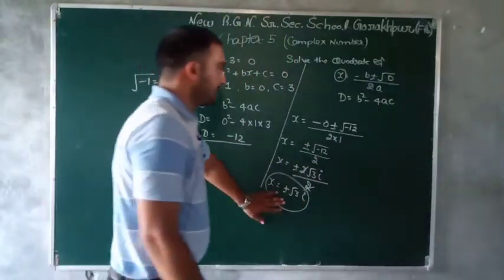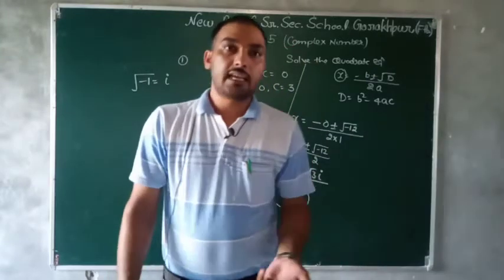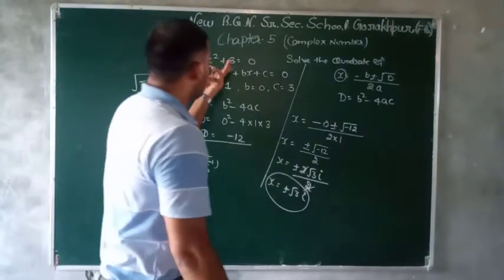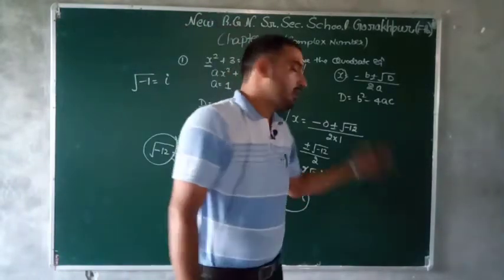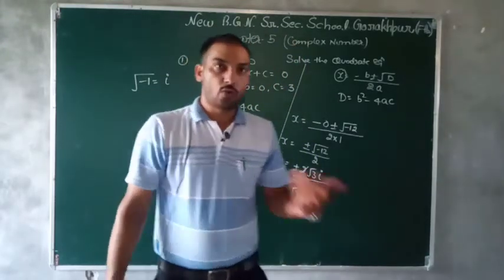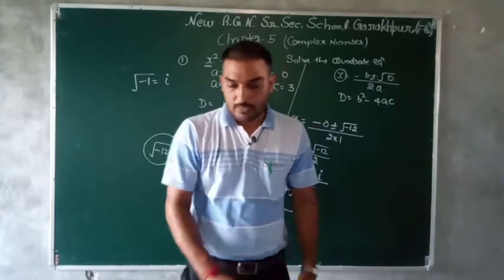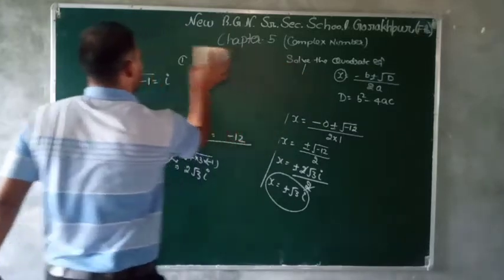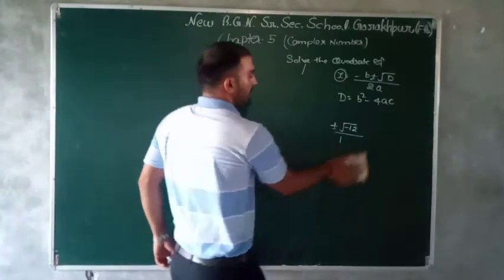I hope आप बहुत अच्छे से समझ गए — यह बहुत आसान topic है quadratic equation को solve करना। कई बार competition exams में भी यह question आता है। जब D negative हो तो complex number की help से solve करते हैं और roots complex number की form में आती हैं।